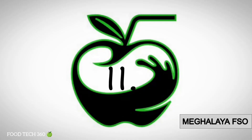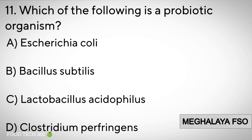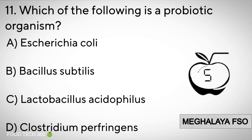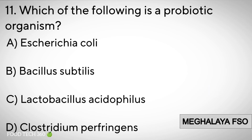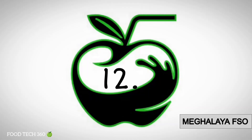Question number eleven. Which of the following is a probiotic organism? A. Escherichia coli, B. Bacillus subtilis, C. Lactobacillus acidophilus, D. Clostridium perfringens. Correct answer: C. Lactobacillus acidophilus.